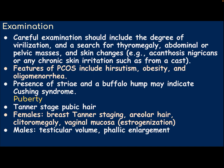Examination: Careful examination should include the degree of virilization and a search for thyromegaly, abdominal or pelvic masses, and skin changes such as acanthosis nigricans or any chronic skin irritation such as from a cast. Features of polycystic ovarian syndrome include hirsutism, obesity, and oligomenorrhea. Presence of striae and buffalo hump may indicate Cushing syndrome.